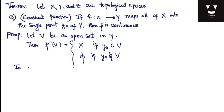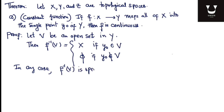In any case, f⁻¹(V) is either X or the empty set, and in both cases f⁻¹(V) is open in X. Hence f is continuous, because for any open set V of Y, f⁻¹(V) is open in X. So every constant function between two topological spaces is continuous.